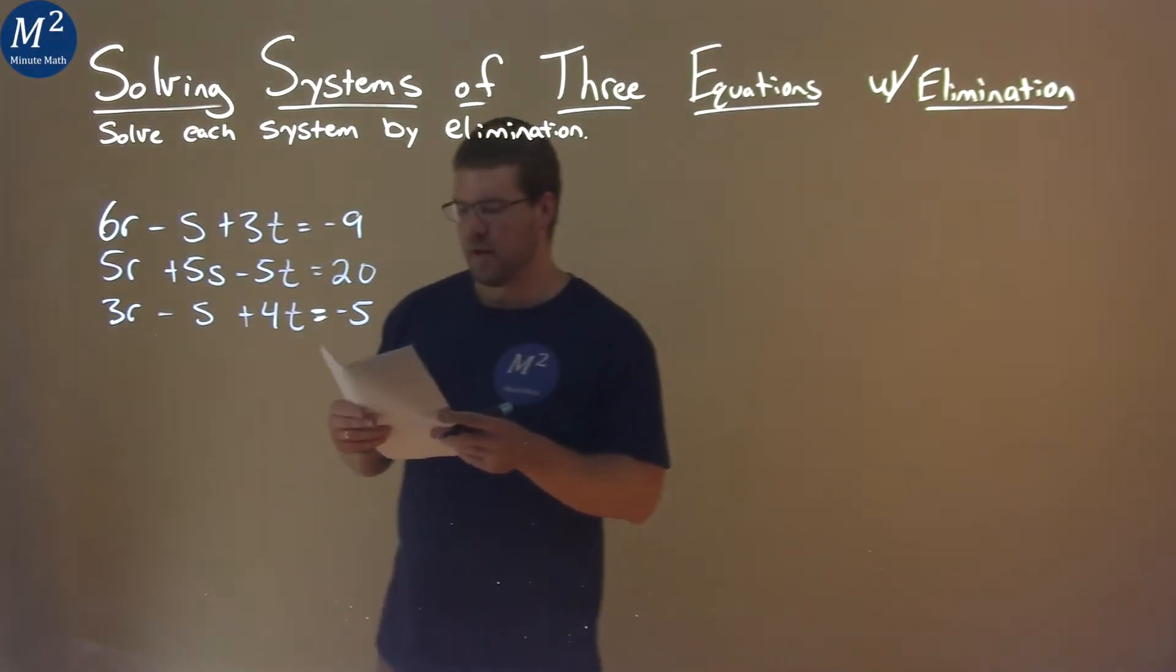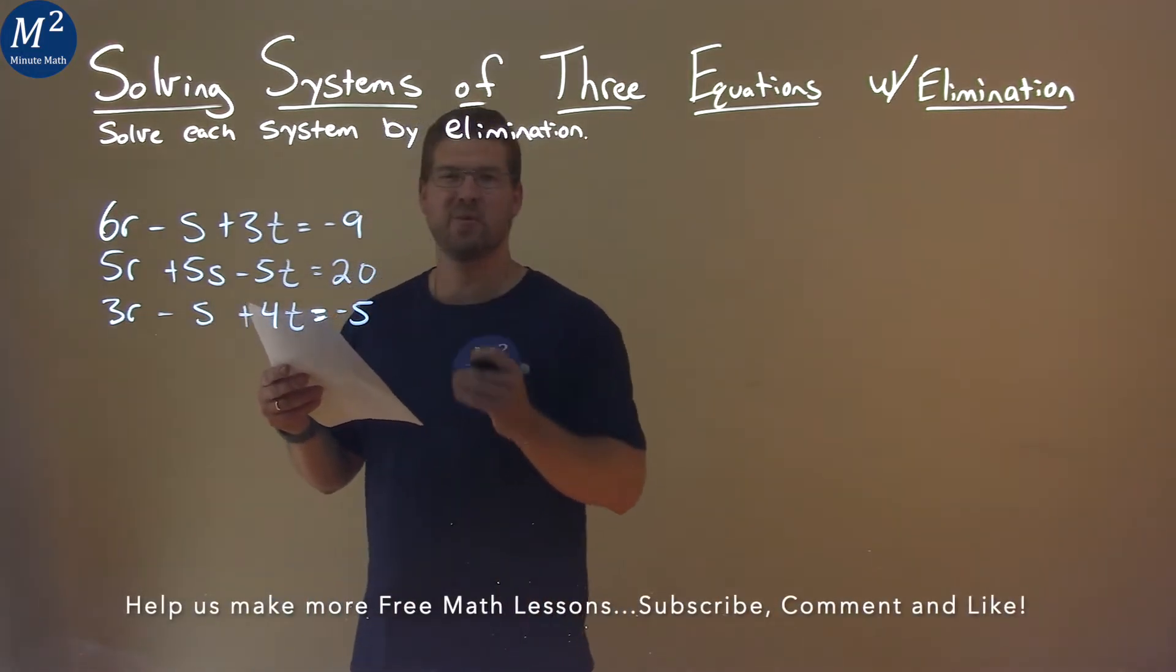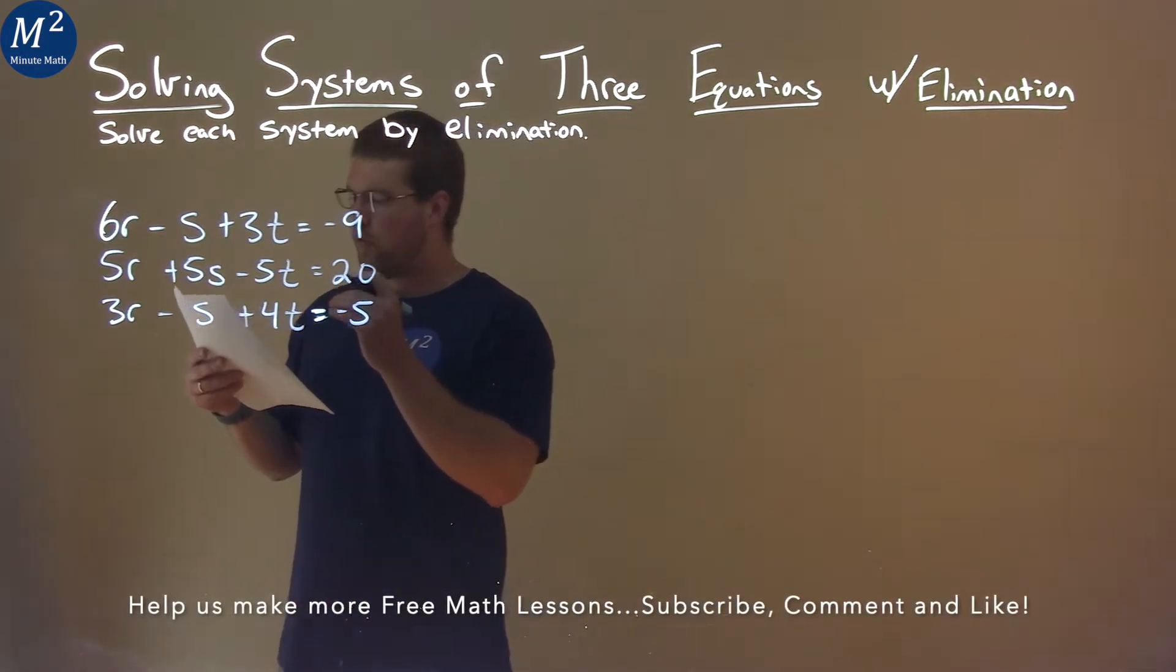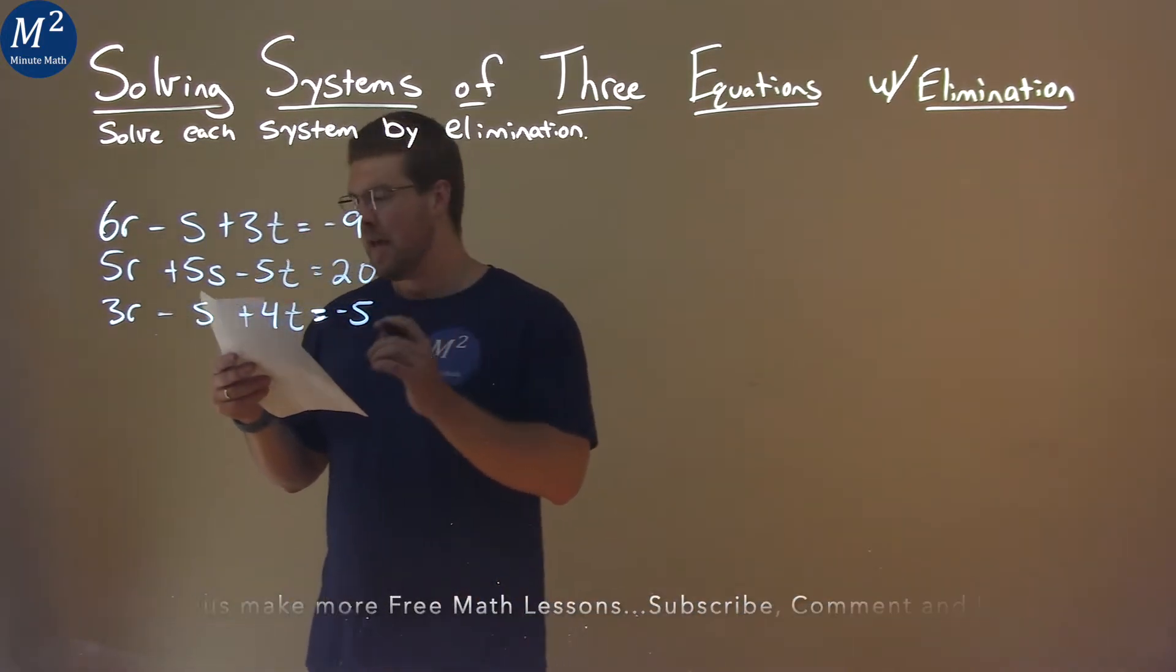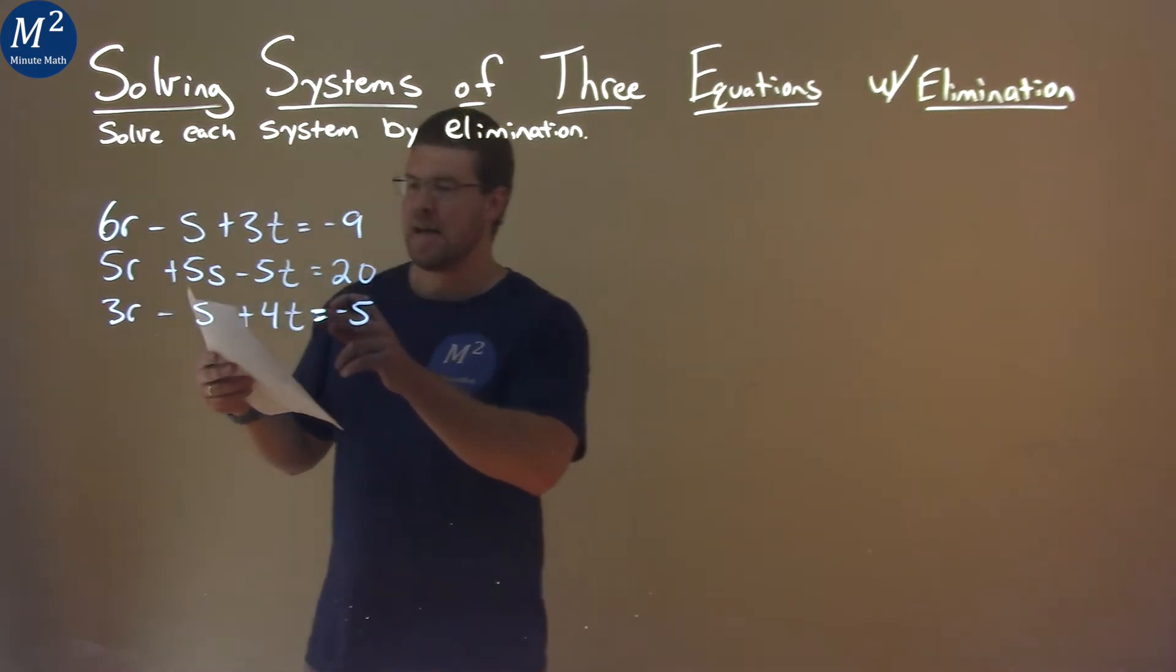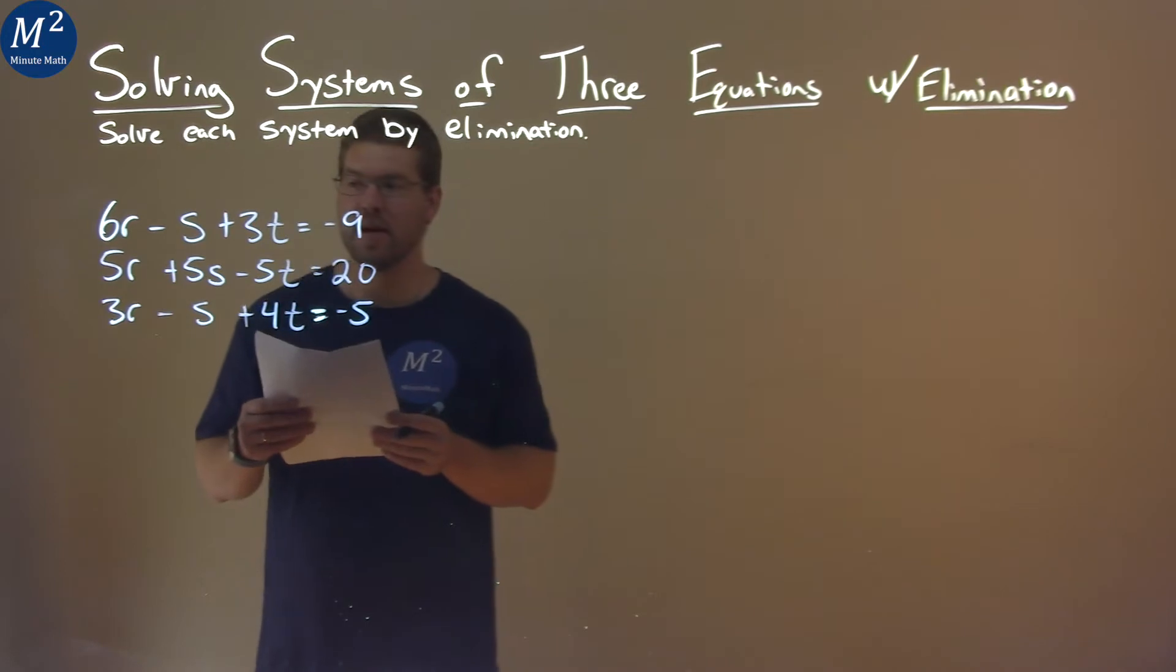We're given this problem right here. 6r minus s plus 3t equals negative 9. 5r plus 5s minus 5t equals 20. And lastly, 3r minus s plus 4t equals negative 5. And we need to solve this system by elimination.